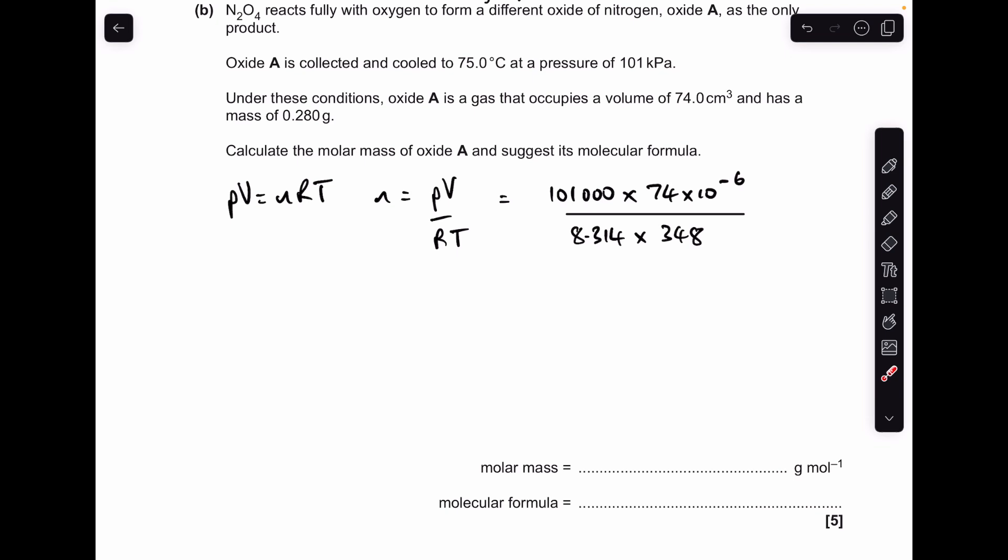And just quickly talk about the unit conversions. This is where the mistakes tend to be. So the pressure of 101 kilopascals. We've got to put that into pascals. So it's 101,000. The volume can't be in centimeters cubed. It needs to be in meters cubed. I just put a times 10 to the minus 6 after the number of centimeters cubed. And that puts it straight into meters cubed.